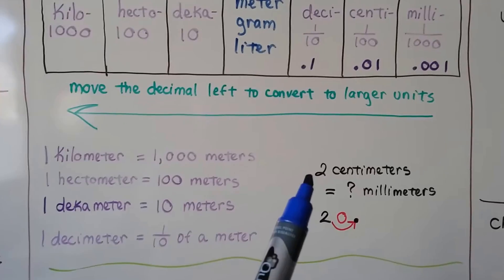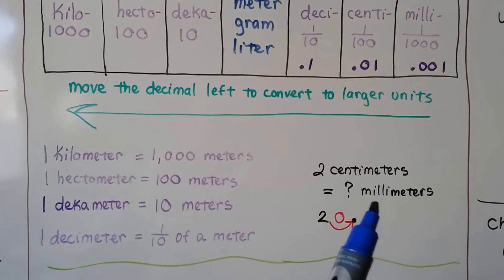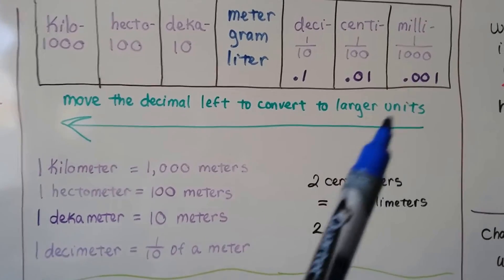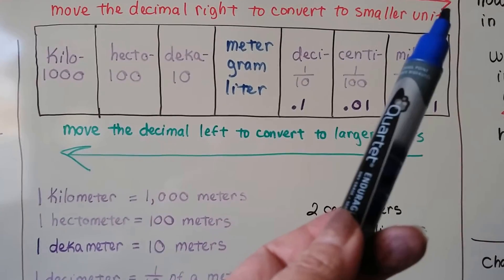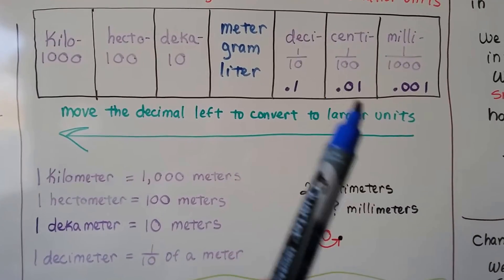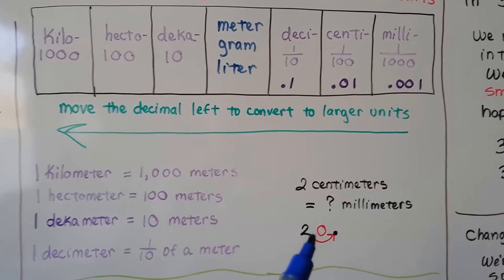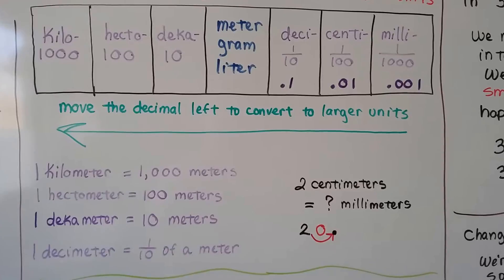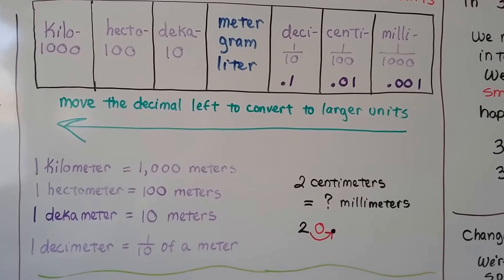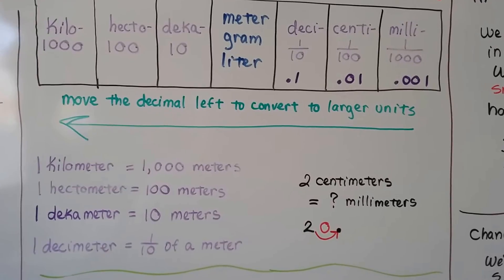So if we have two centimeters and we want to change it to millimeters, well here's centi and here's milli. So we're going smaller. So that means we're going to move to the left because we're going smaller. So the decimal place from centi to milli is one hop. We're going to move the decimal one hop to the left. We're going to put a zero as a placeholder. So two centimeters is the same thing as twenty millimeters.